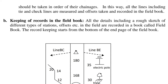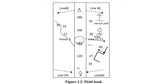Keeping records in the field book: All details including a rough sketch of different types of stations, offsets, etc. in the field are recorded in a book called the field book. Record keeping starts from the bottom of the end page of the field book.